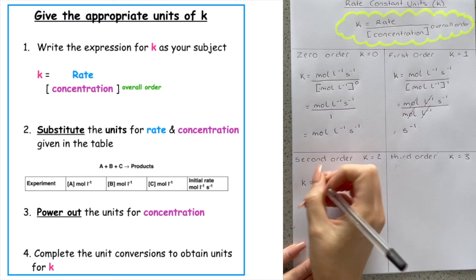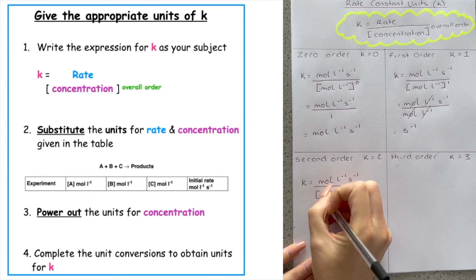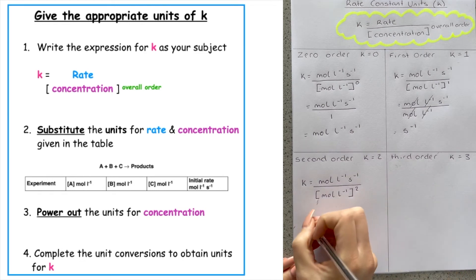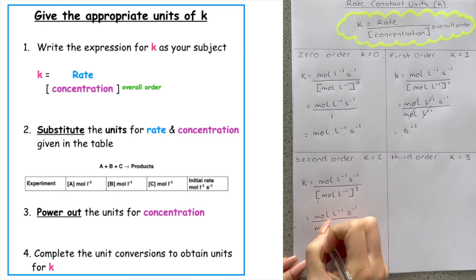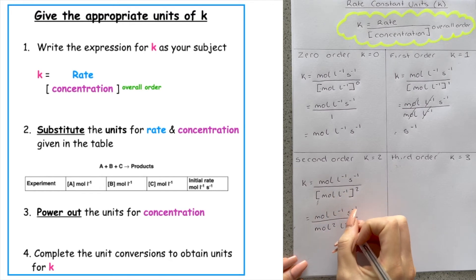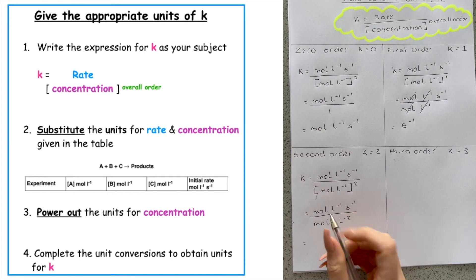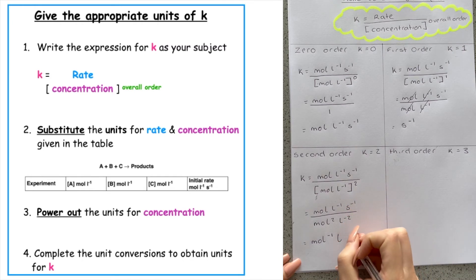So the exact same thing for second order. Unit of rate doesn't change, it's still mole per litre per second. Remember, this will always be given to you in a table. Concentration is always mole per litre. And the overall order that I've worked out for my reaction is second order. So I put it to the power of two. Top line remains the same. Bottom line, mole squared. Minus one plus two gives me L to the one. But we don't write positive ones in chemistry, as the letter already stands for having one of that entity. Then we have S to the minus one.